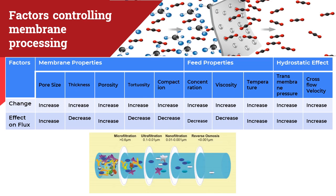The factors controlling membrane processing fall into three major categories: membrane properties, feed properties, and hydrostatic effects. Membrane properties include pore size, thickness, porosity, tortuosity, and compaction. Increasing pore size or porosity increases flux; increasing thickness, tortuosity, or compaction decreases flux. For feed properties, increasing concentration or viscosity decreases flux, while increasing temperature increases flux. For hydrostatic effects — trans-membrane pressure and cross-flow velocity — increasing either property also increases flux.